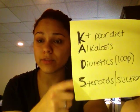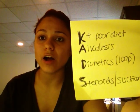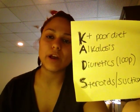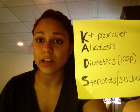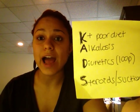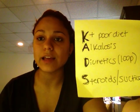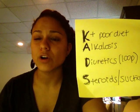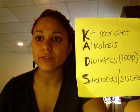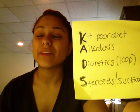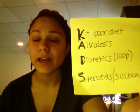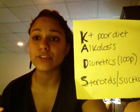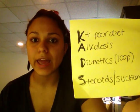Also, A is for alkalosis. If a person gets nasogastric suctioning, they could get alkalosis, and that can cause hypokalemia. Also, D is for diuretics, such as Lasix, which are potassium-losing diuretics. And S is for steroids, such as prednisone and suctioning, like we said.